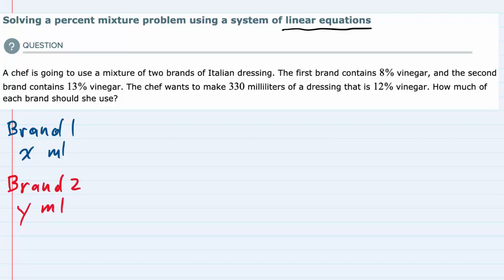I know that the total amount of dressing is going to be 330 milliliters. So if I take the amount of brand one, x, and add the amount of brand two, y, the total is 330 milliliters: x + y = 330.